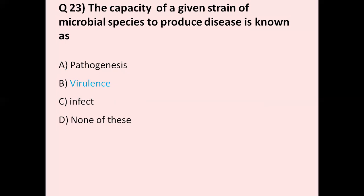Question number 23: The capacity of a given strain of microbial species to produce disease is known as — option A pathogenesis, option B virulence, option C infection, option D none of these. The correct answer is virulence. Pathogenesis means a study of the original source of diseases. The correct answer is option B, virulence.